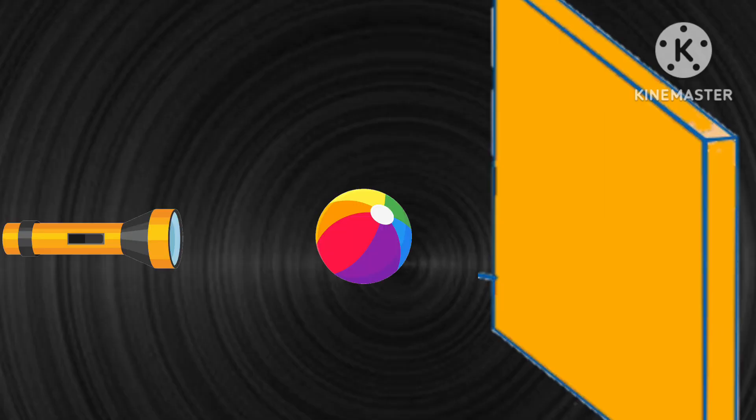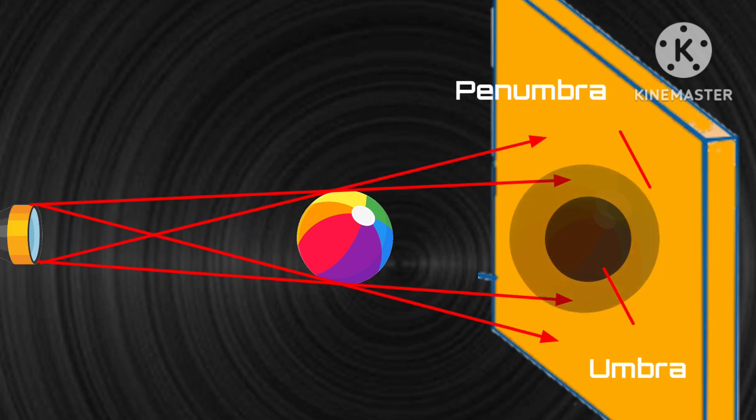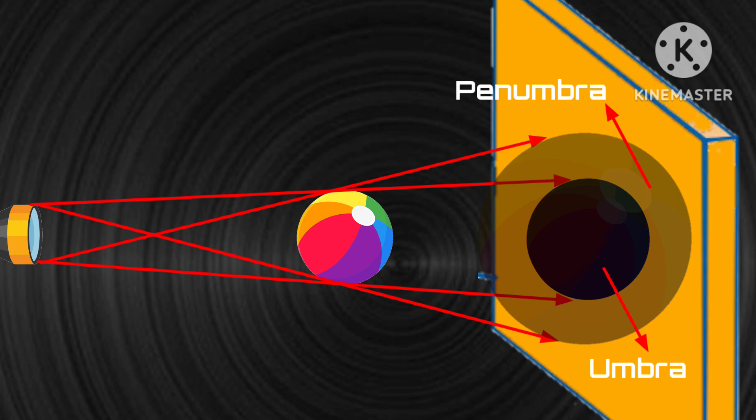Size of the shadow is totally dependent on the distance between the source of light and the object. Closer the source of light, larger will be the size of the shadow. Farther the source of light, smaller will be the size of the shadow.